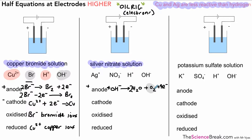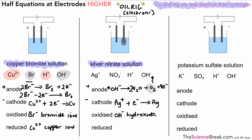At the cathode, the rule is hydrogen is given off unless the metal is less reactive than hydrogen. We've got silver here, and silver is less reactive than hydrogen, so it's silver that's going to be produced at the cathode: Ag⁺ plus an electron gives us Ag, the silver metal. What's been oxidized? It's the hydroxide ions that lost electrons — they've been oxidized. Reduction is gain of electrons — it's the silver ions that gained electrons, so silver ions have been reduced.